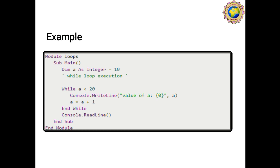The loop continues incrementing 'a' by 1 up to 19, because the condition is 'a less than 20'. So values are printed from 10 up to 19. Then End While, Console.ReadLine, End Sub, and End Module close the program. Dear students, don't worry — when our practical session starts, I will perform all these control loop examples using Visual Studio software.